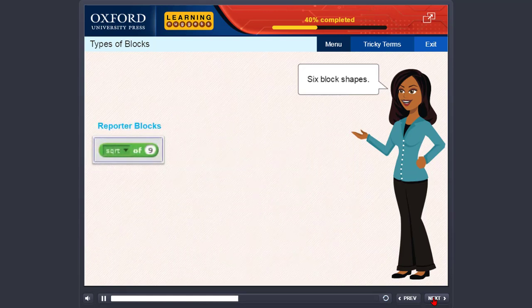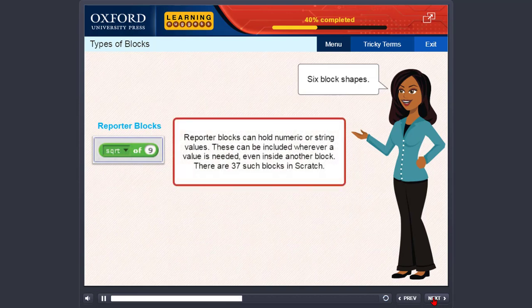Reporter blocks. Reporter blocks can hold numeric or string values. These can be included wherever a value is needed, even inside another block. There are 37 such blocks in Scratch.